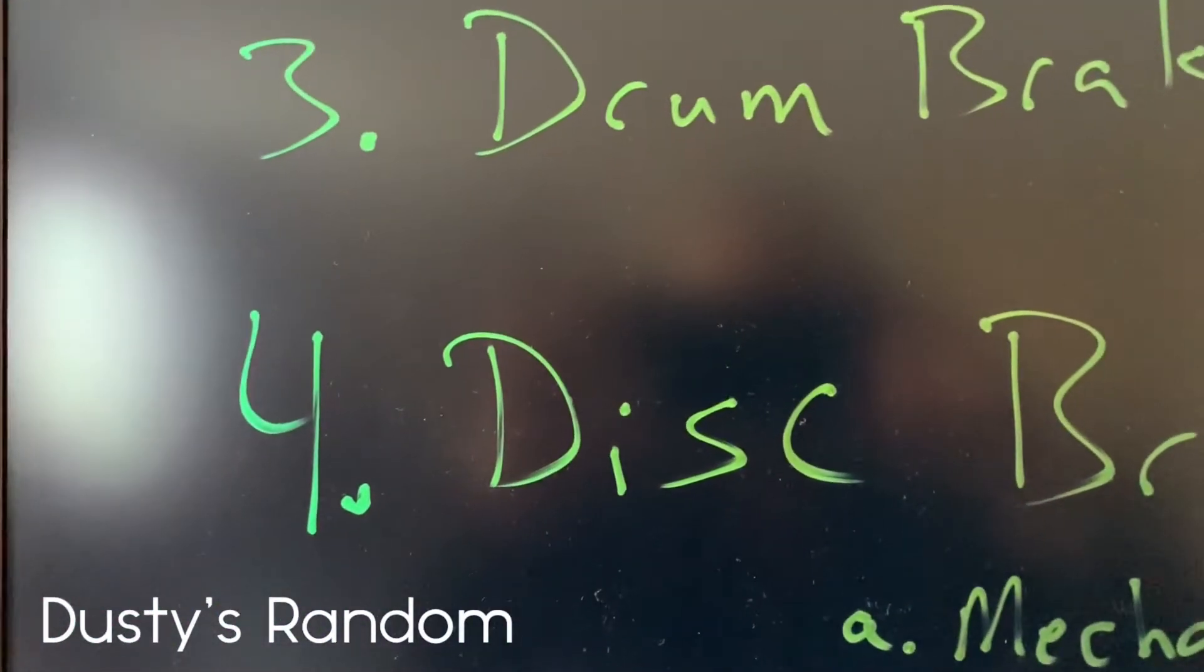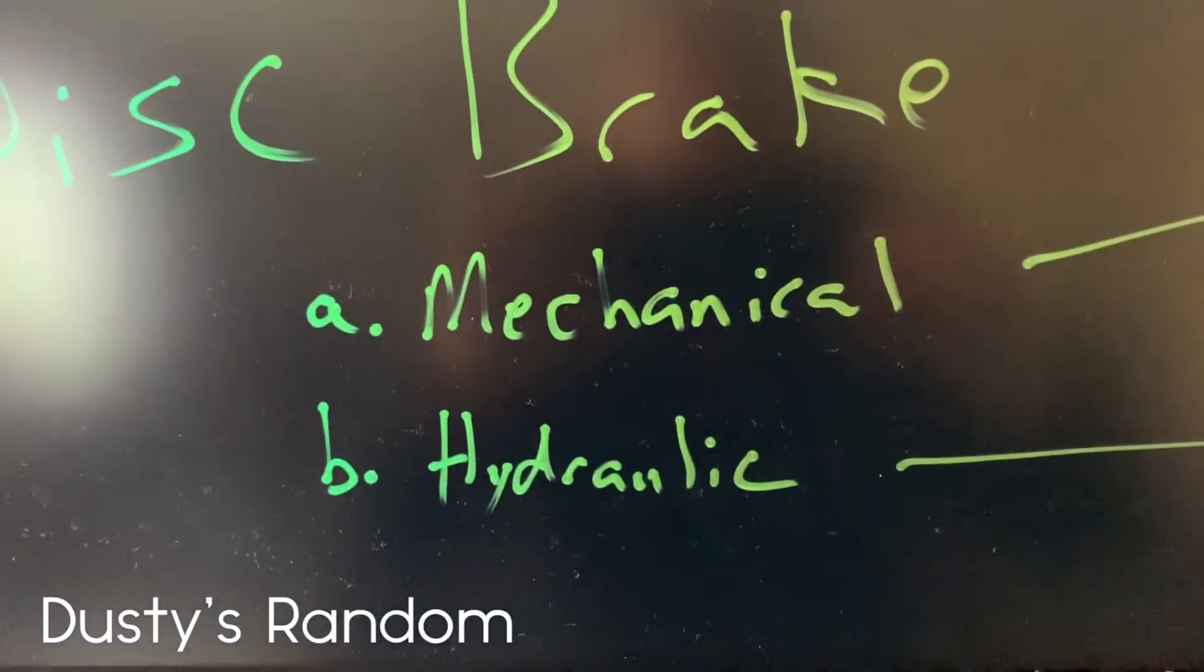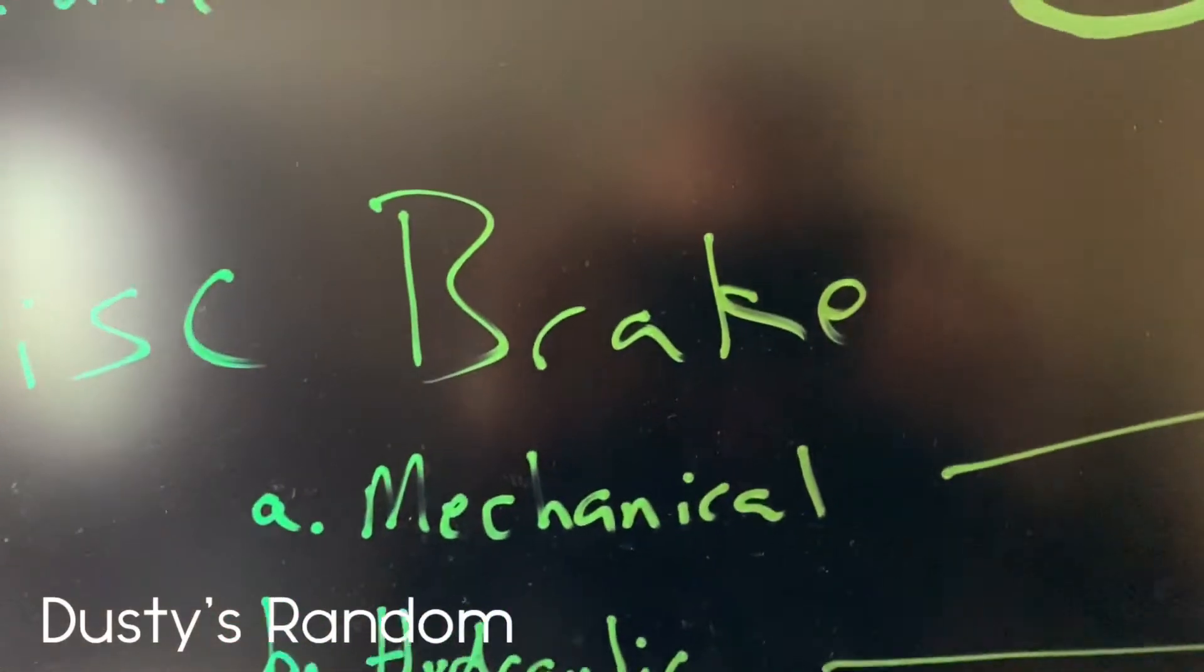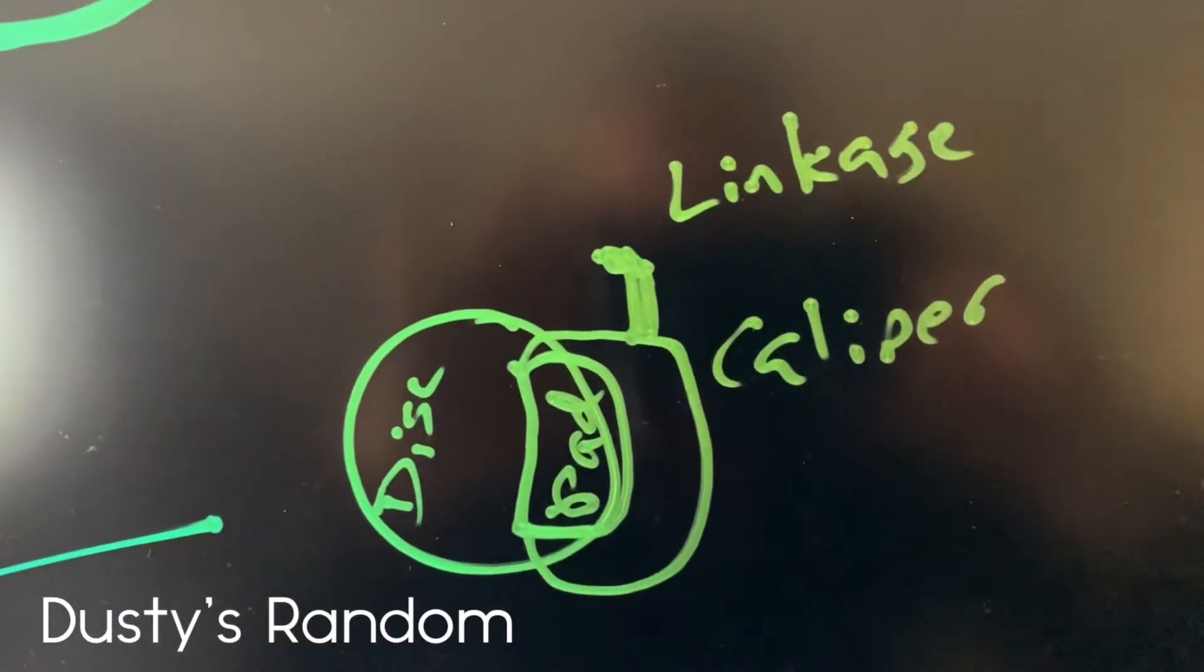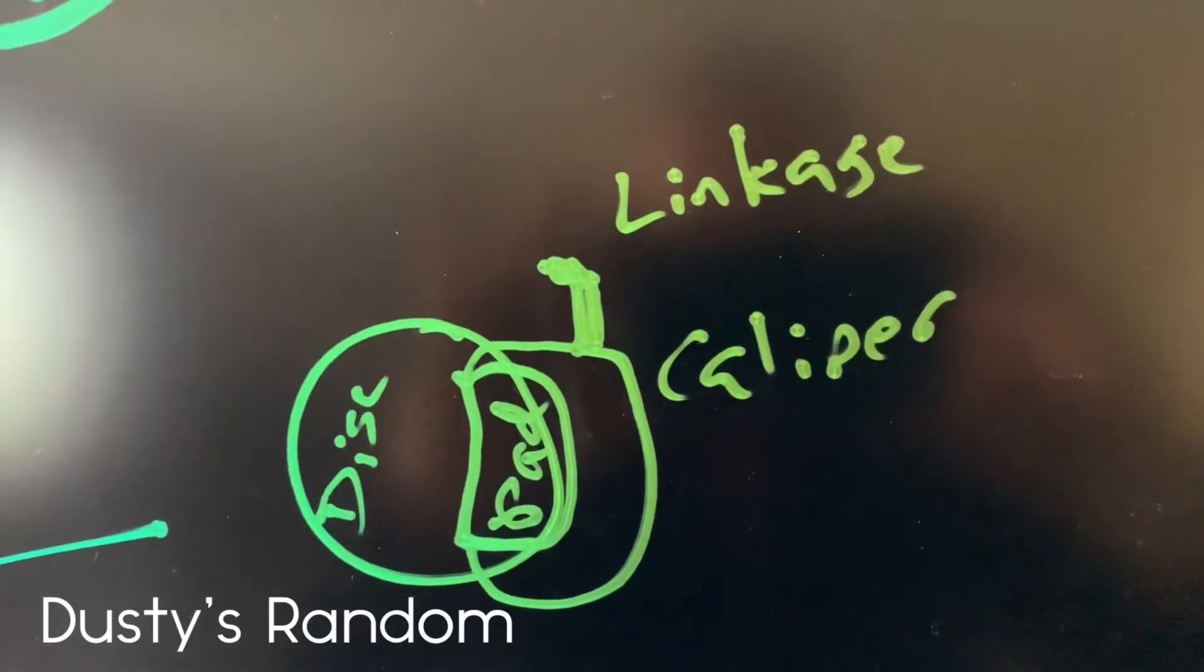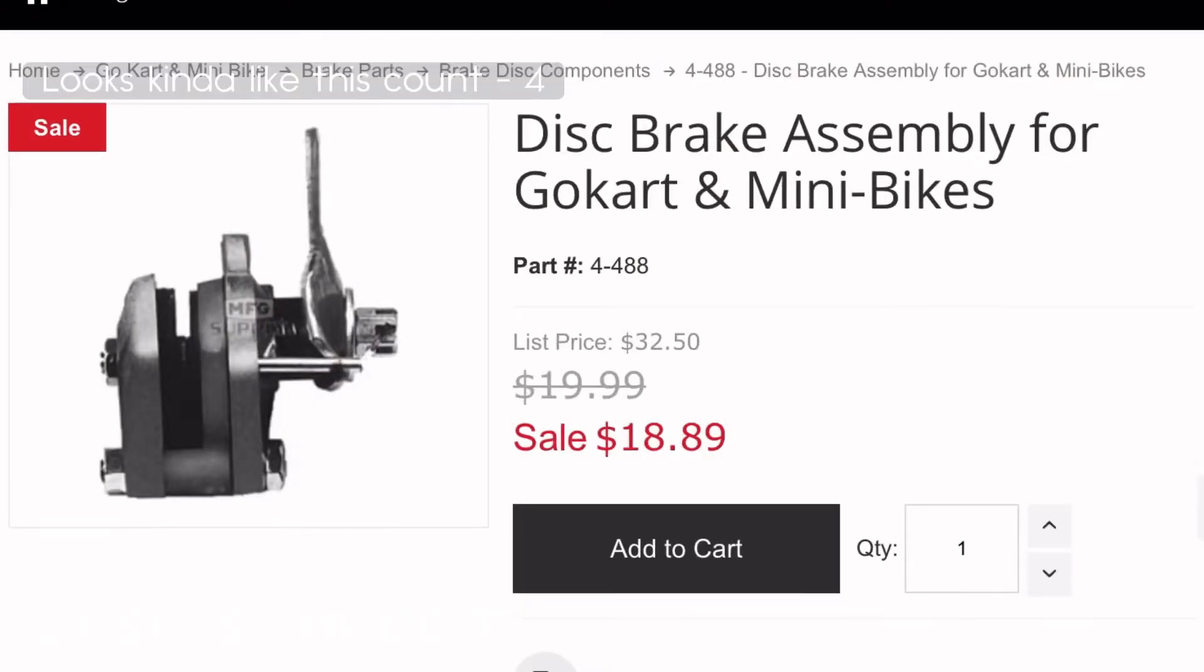And we got disc brakes. Disc brakes also can be mechanical or hydraulic. They use a disc around a caliper and you pull the linkage and the caliper closes. It is the manual mechanical version. It looks kind of like this.